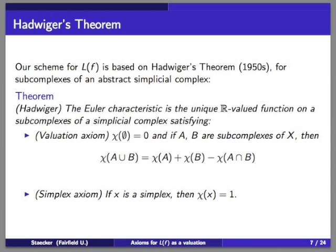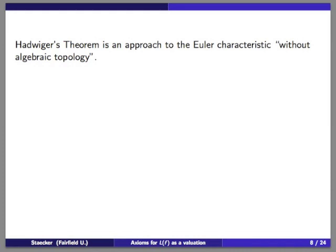That normalization property, combined with the valuation axiom, characterizes the Euler characteristic. Hadwiger's theorem is an approach to the Euler characteristic without algebraic topology — you don't need to talk about Betti numbers. This comes from a well-developed theory of lattice valuations. If you specify a complex and consider the set of all subcomplexes, this forms a distributive lattice: a set with two operations — intersection and union — that are commutative, associative, distributive, and satisfy other properties.